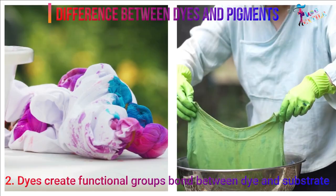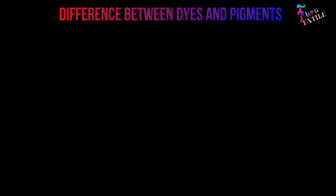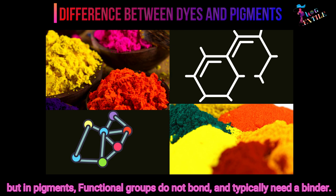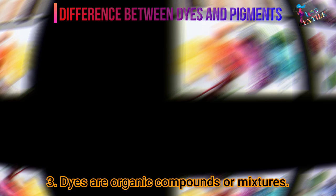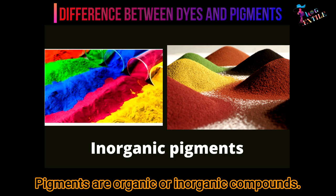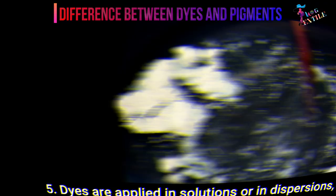Three: dyes are organic compounds or mixtures, while pigments are organic or inorganic compounds. Four: dyes are soluble but pigments are insoluble in the medium.